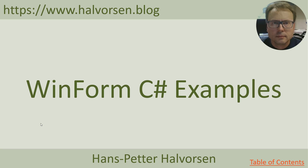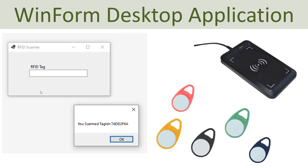Once we have tested the device and confirmed it works as expected, we are ready to start creating a Windows Forms application using C#. I will start with a very basic example: create a simple text box, make sure it is active, tap different tags on top of the reader, and then create a message box that says you scanned a tag ID for that specific tag.